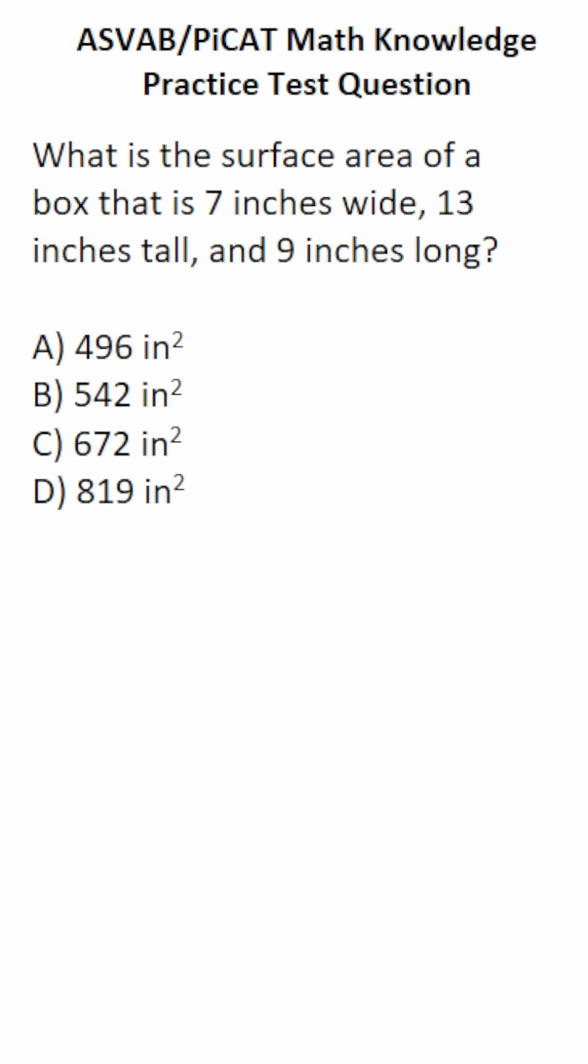For the ASVAB and PiCAT, you're not permitted to use a calculator or a reference sheet, so you have to know how to find the surface area of a rectangular prism. Rectangular prisms have three dimensions: length, width, and height.